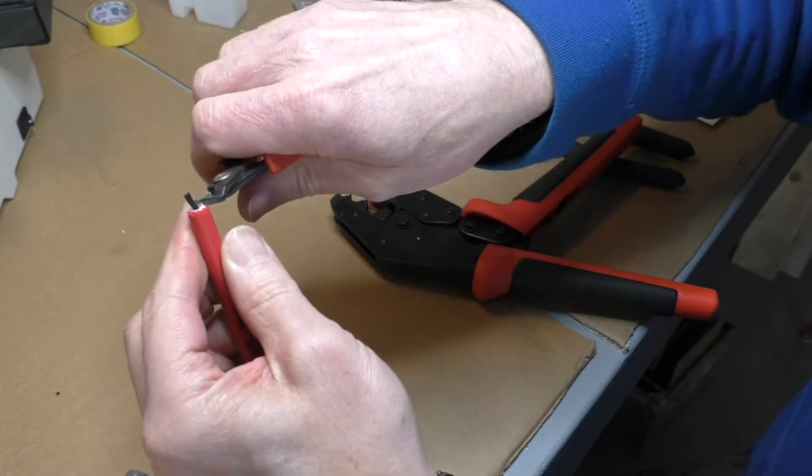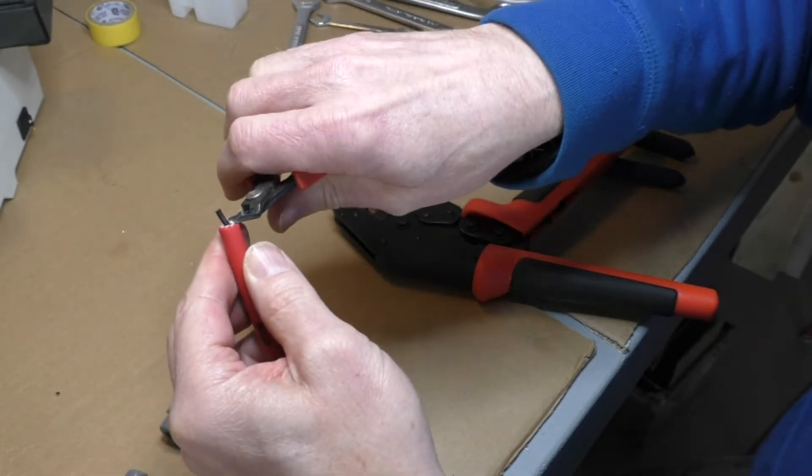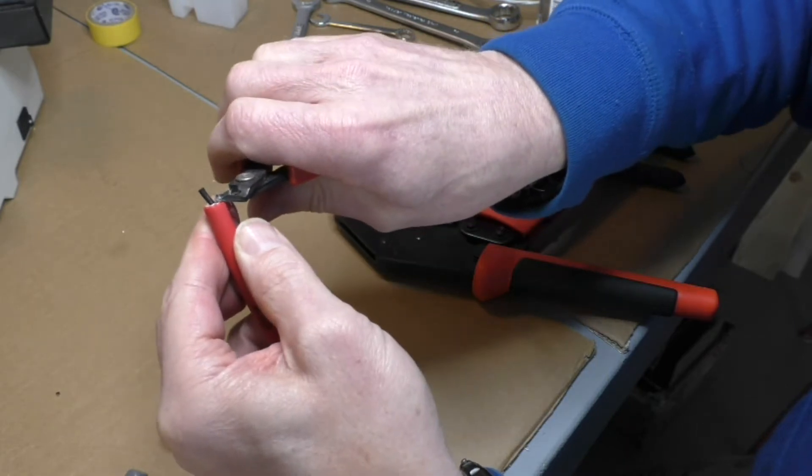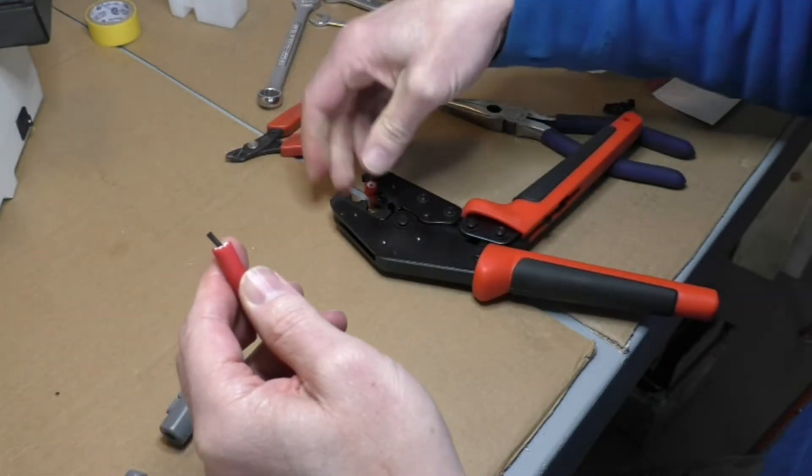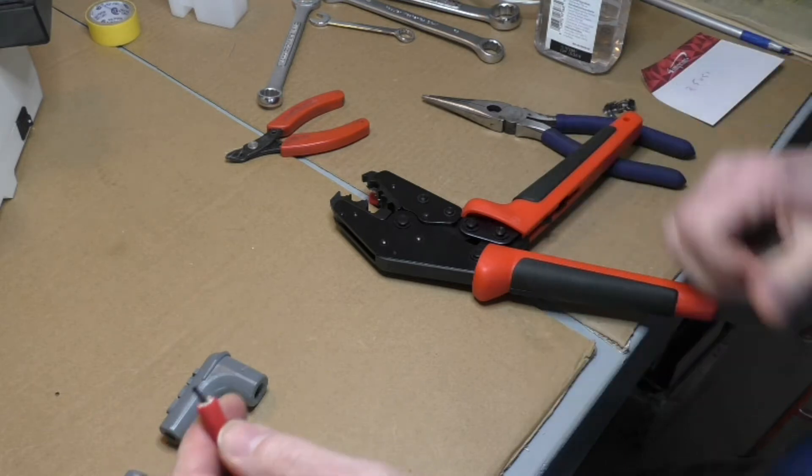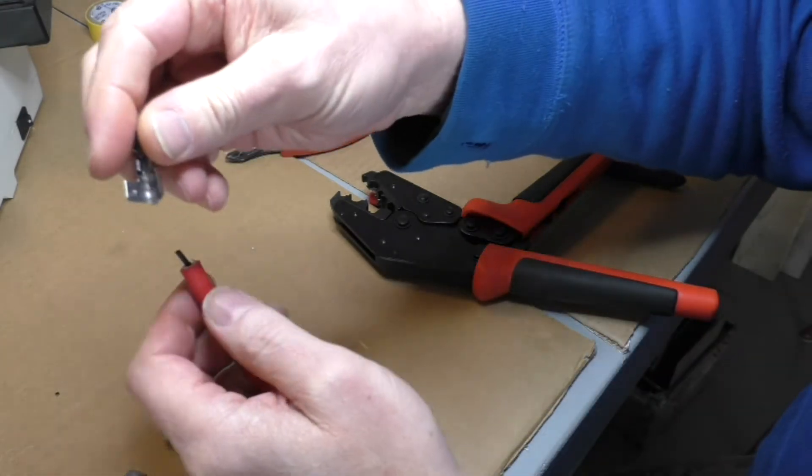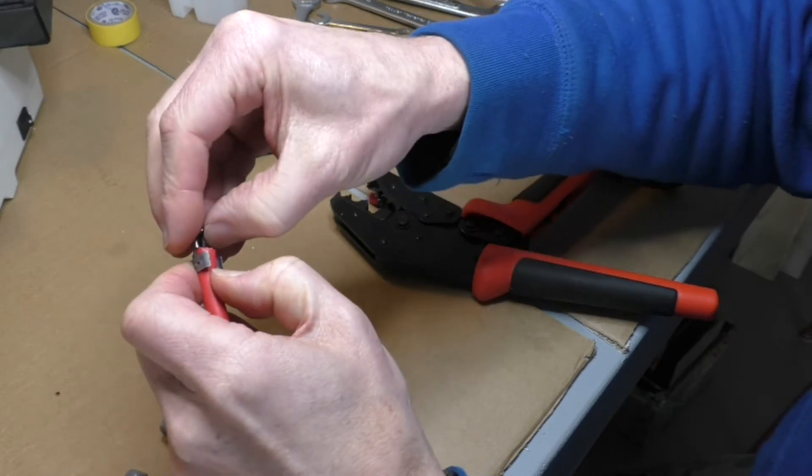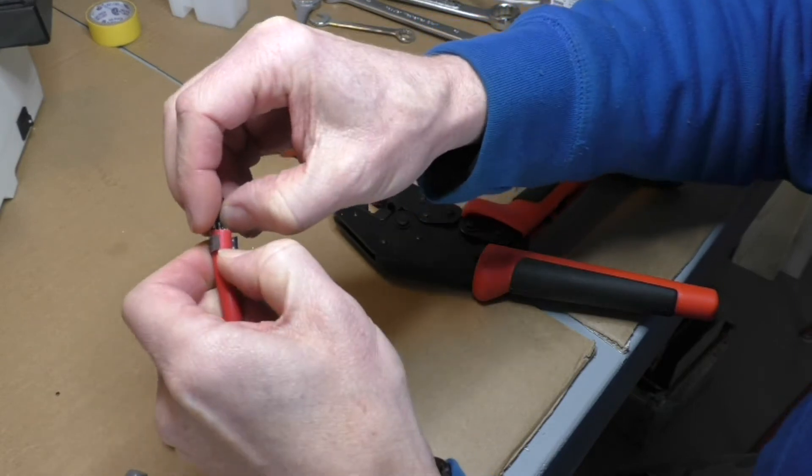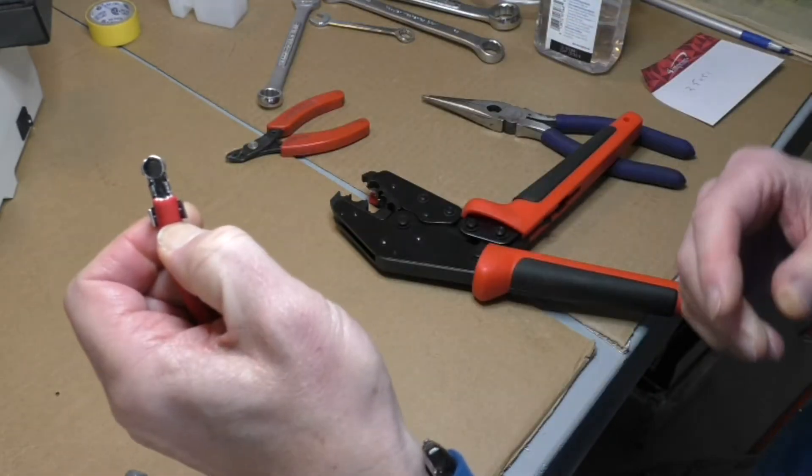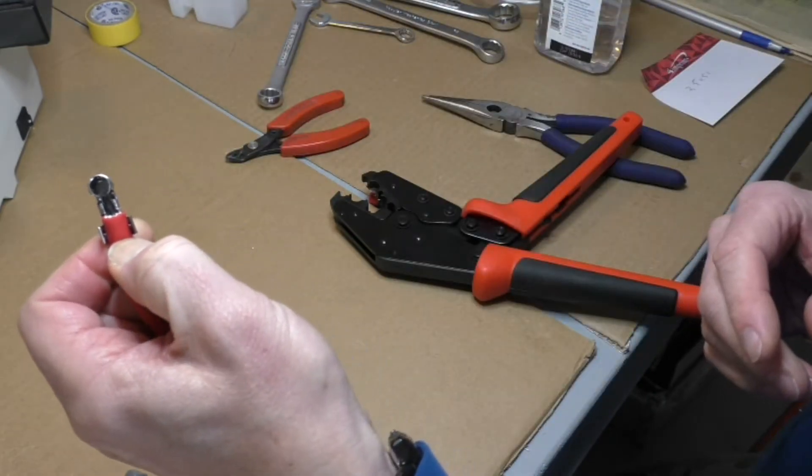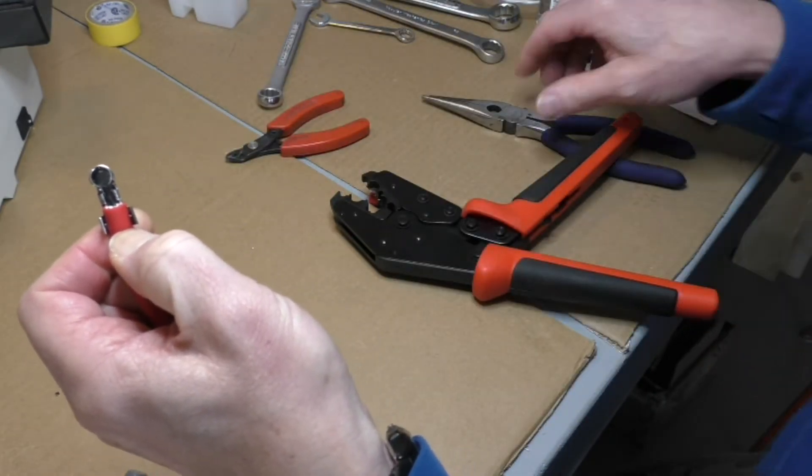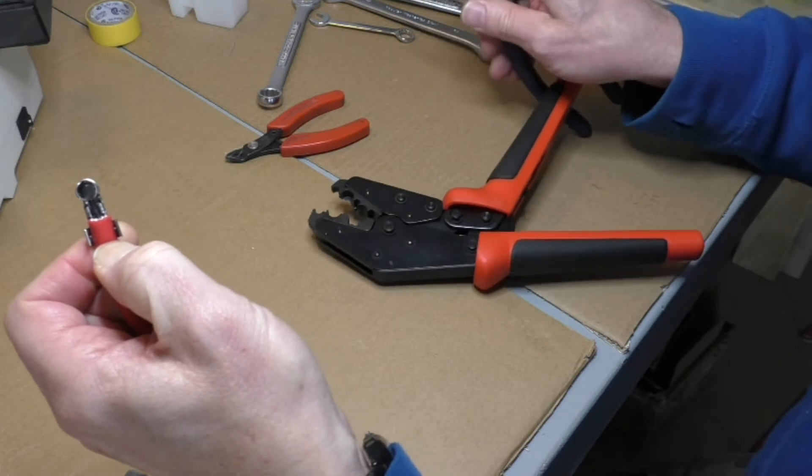We're just going to trim some of the fiberglass strands off here. Going to take our 90 degree terminal here. We're just going to put that in so that the insulation's about a 16th of an inch past the end of the wings here.